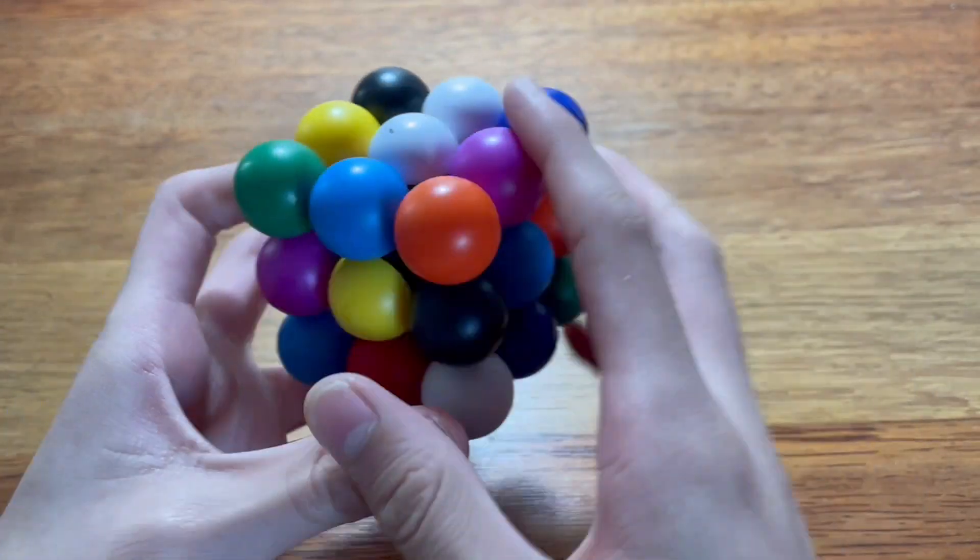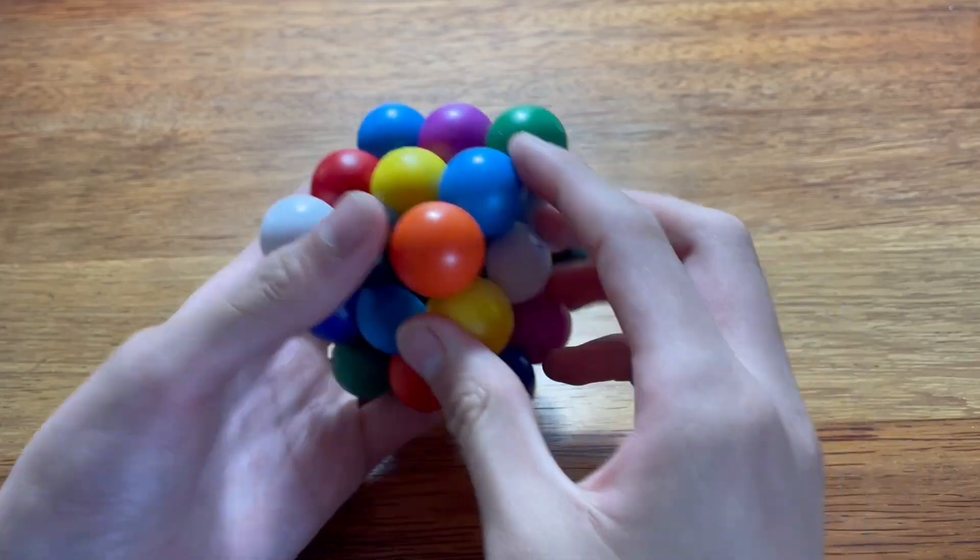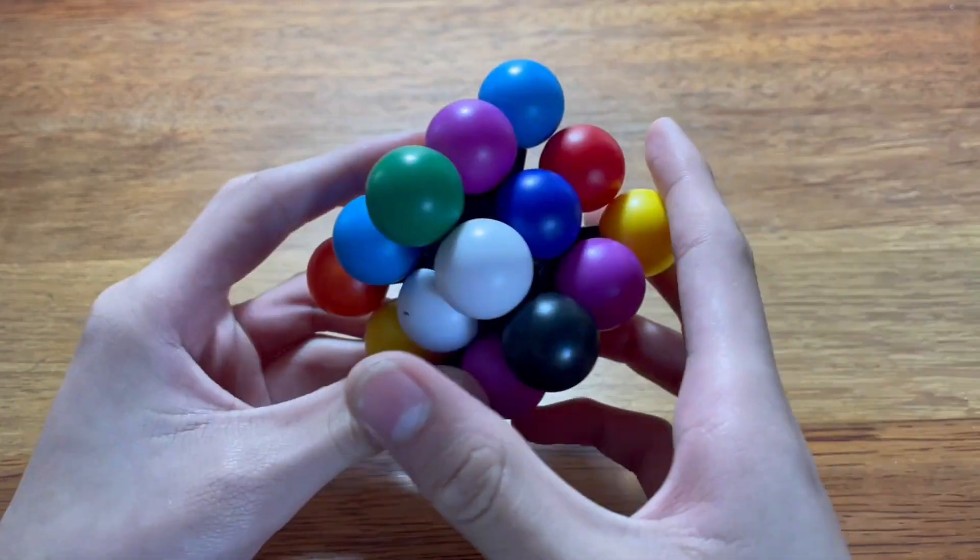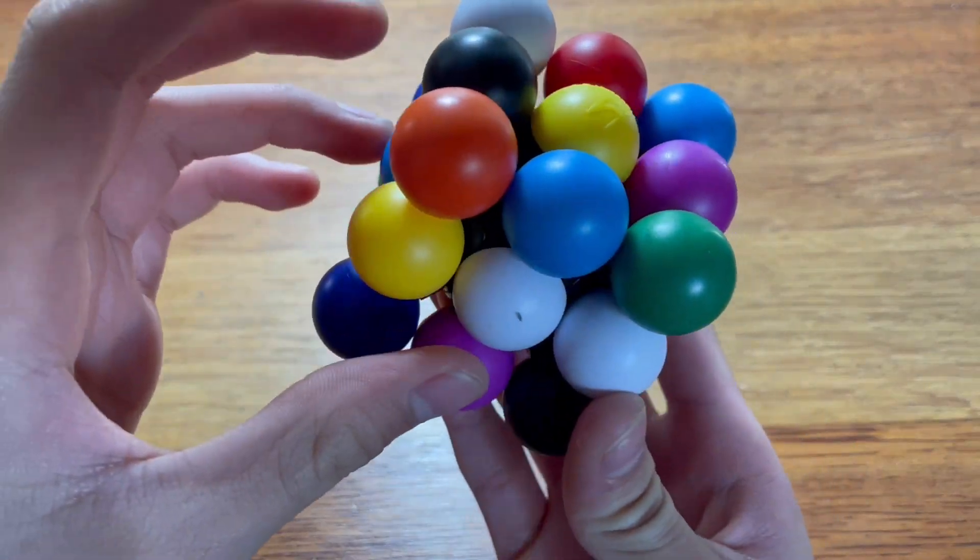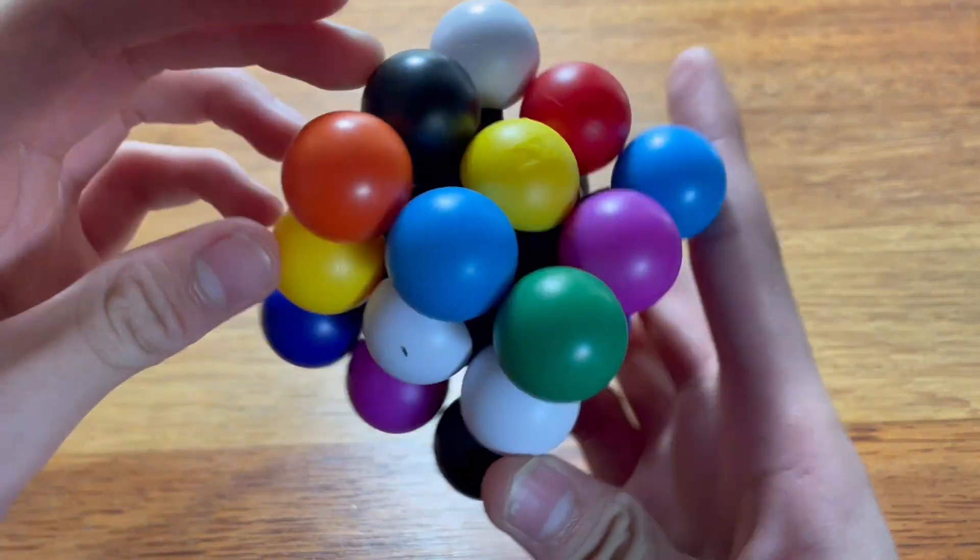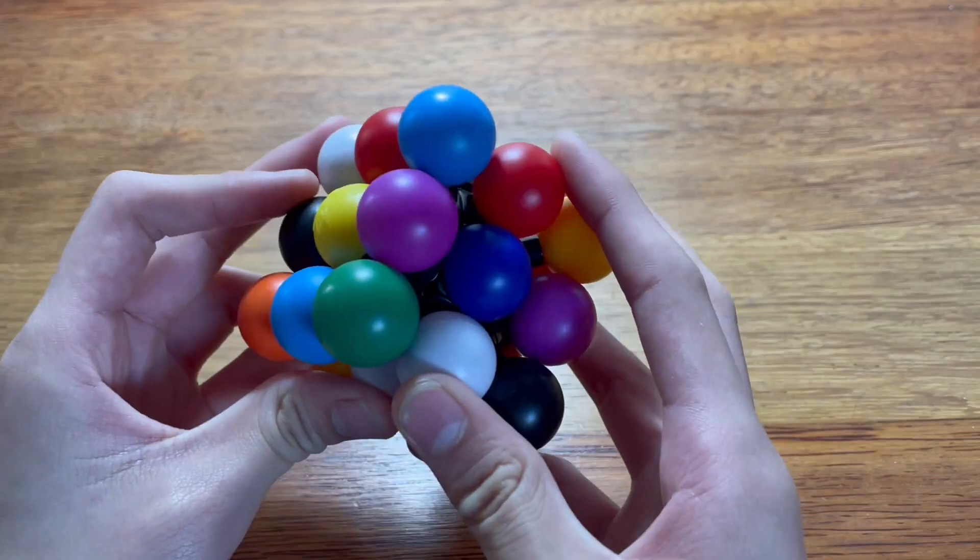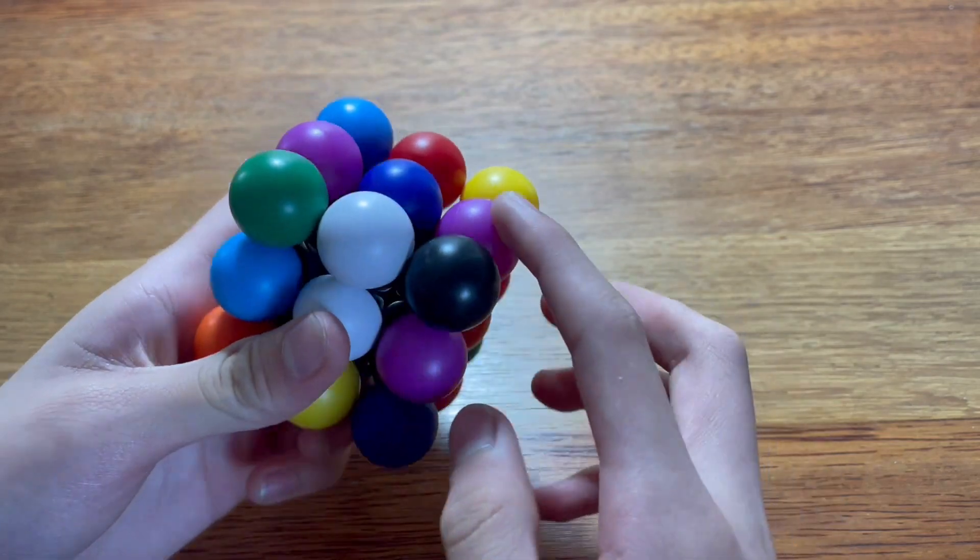So what I can do is I can do a U-perm here. Right. And then I can do a U-perm here. So I've got black. I've got yellow. Now I'll do white. So I just need to keep track of where the black and yellow are. I can't move those.